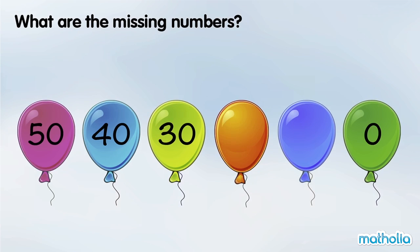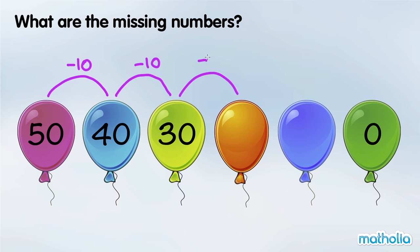What are the missing numbers? In each step, the numbers are going down by 10. 50 minus 10 is 40. 40 minus 10 is 30. 30 minus 10 is 20.